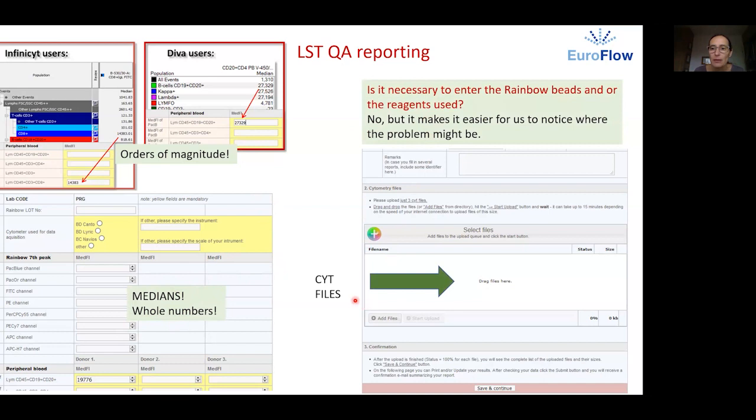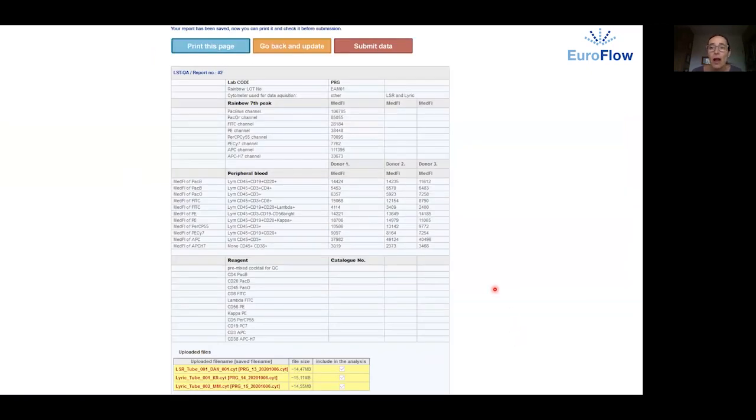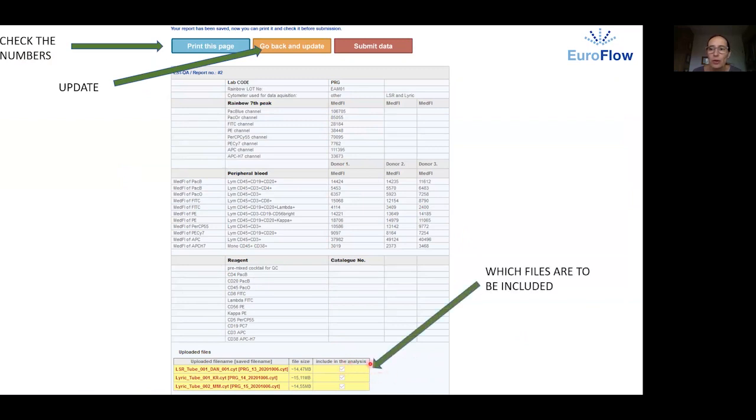When uploading the SID files drag them here and click start upload. This might take several minutes. When the upload of all three files is finished which you should see here in the status window and size window click save and continue. Do not upload FCS files or any other types of files except SID files. After saving you can print the filled form and check the numbers and files. If you find an error you can go back and update the form and you can control which files we will use for the analysis by marking them in this include in the analysis field.